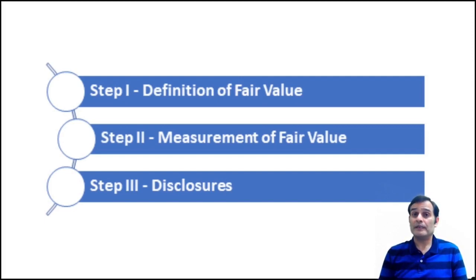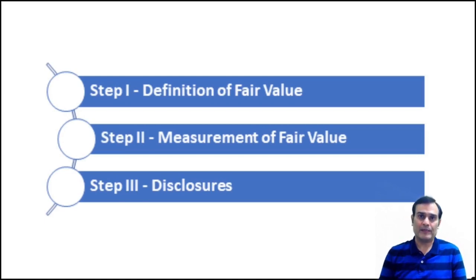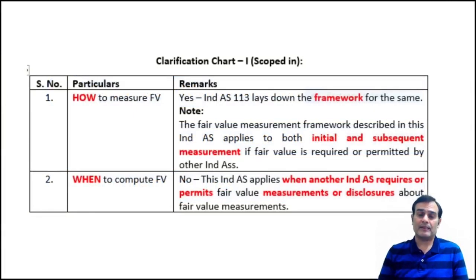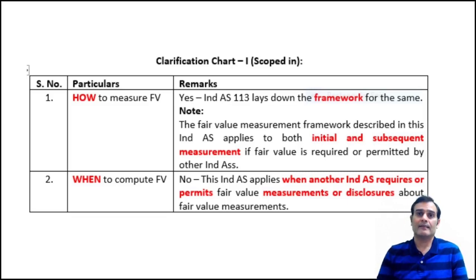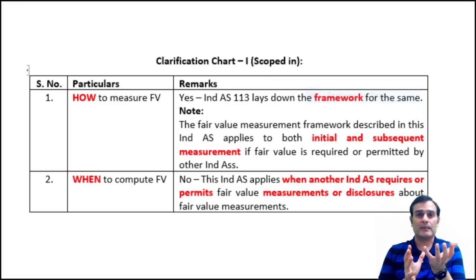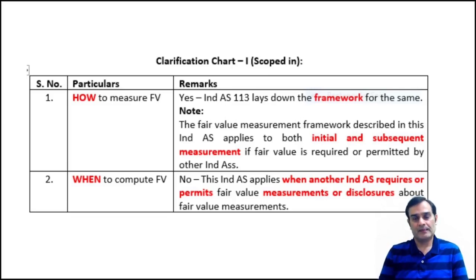I'm not going to get into the definition of fair value or directly to the three steps at this stage. What I'm going to do is first build a few concepts. Let me tell you what this standard actually deals with — I've made two charts on this. The first clarification chart deals with what I call 'scoped in.' When you look at the scope of the standard, it tells you what is covered — that is scoped in — and what is not covered — that is scoped out. Clarification chart number one is a blend of scoped in and scoped out.